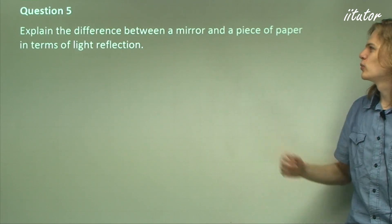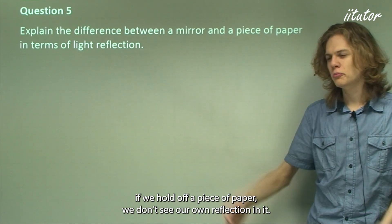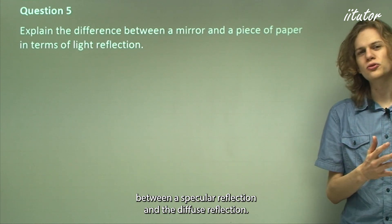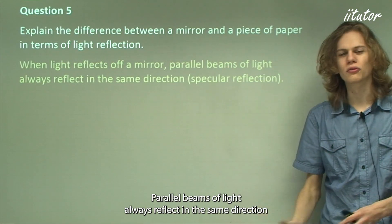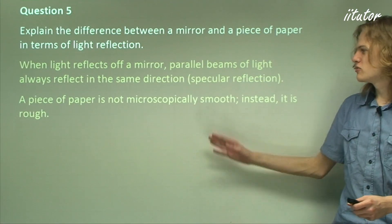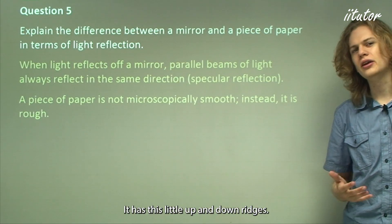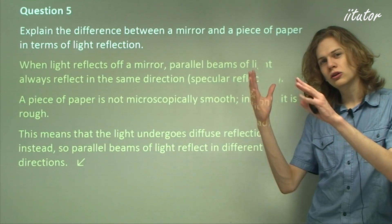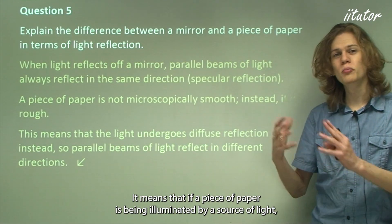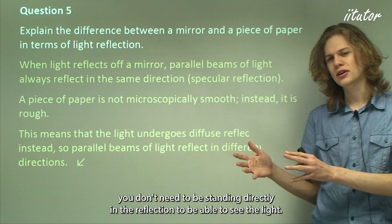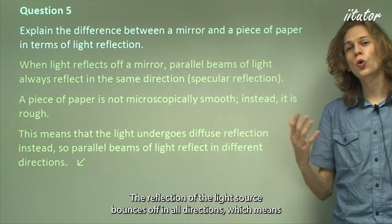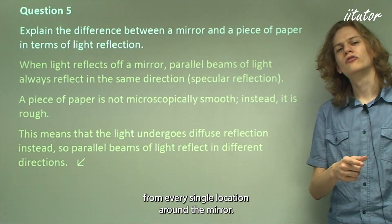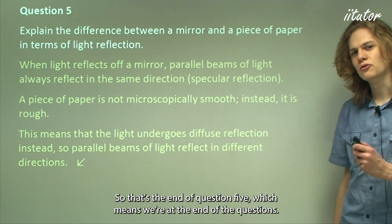Question 5: Explain the difference between a mirror and a piece of paper in terms of light reflection. We know that if we hold up a piece of paper we don't see our own reflection. The difference is between specular reflection and diffuse reflection. When light reflects off a mirror, parallel beams always reflect in the same direction because the mirror is perfectly flat and smooth. A piece of paper is not microscopically smooth — it has little ridges — so it produces diffuse reflection instead. Parallel beams bounce off in different directions, meaning you can see the paper from any direction, whereas for a mirror you can only see the reflection of a light source from a specific location.